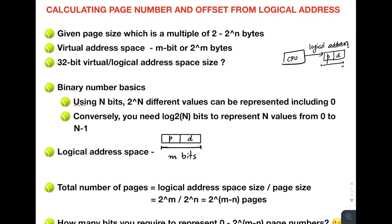In operating systems, the page size is always a multiple of two. The reason for this is that it makes the division of the logical address into page number and offset very easy. Basically, page size is 2^n bytes — it will always be a multiple of 2 — and the virtual address space is m bits.